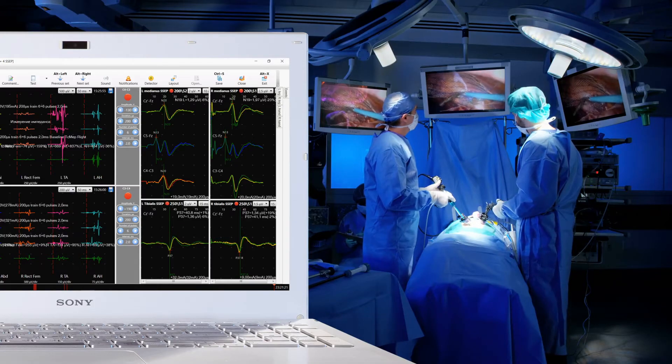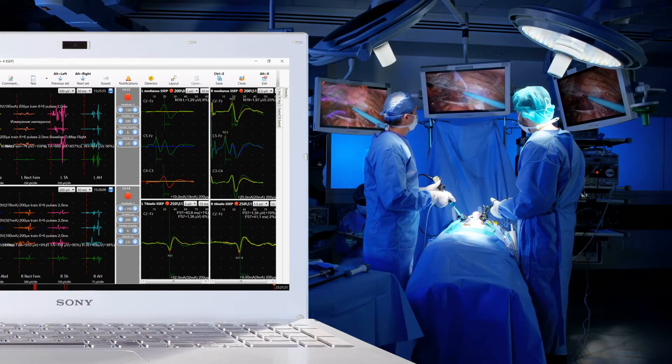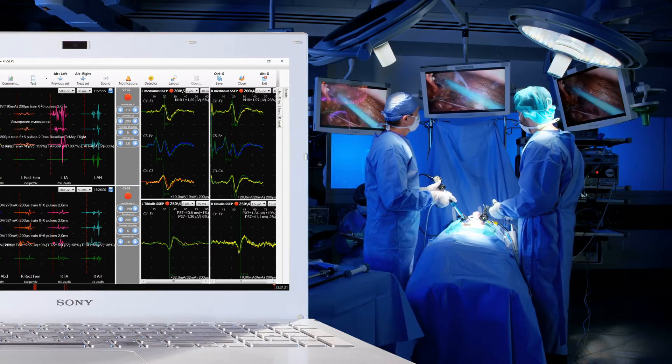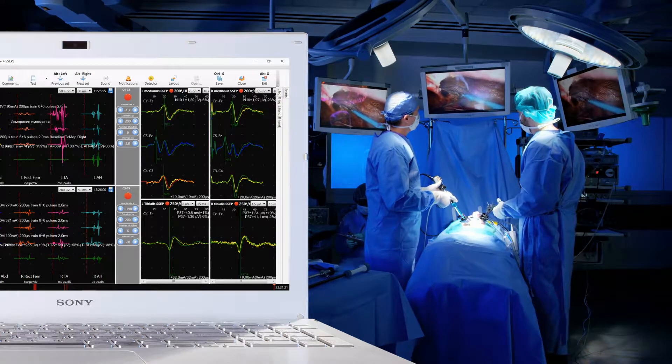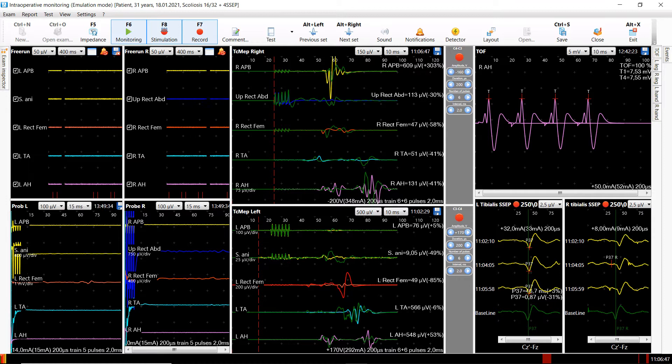Neuru IOM ensures all basic modalities. The traces of different modalities can be displayed simultaneously. For example, you can choose the following data to be shown during scoliosis surgery: